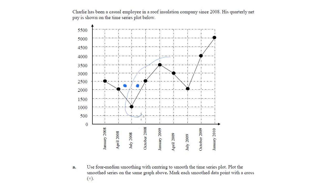The next group of four is these ones here. Going across we're between the second and the third. Going up the page, halfway between the second and the third is where the median is, so we put it here. The next group of four: halfway between the second and the third going across puts us on this line. And halfway between the second and the third going up puts us here.